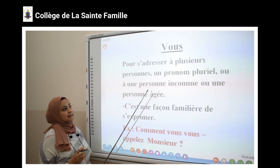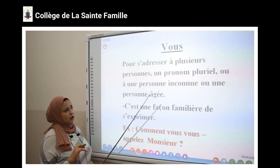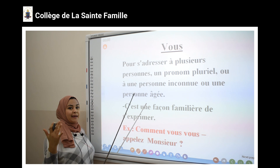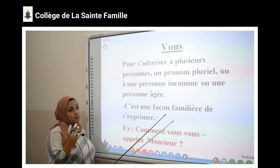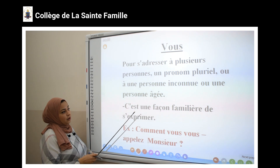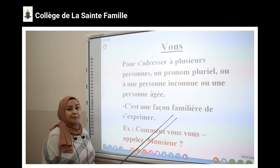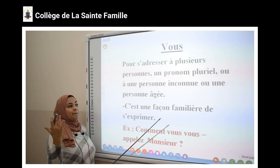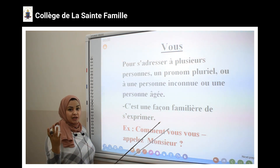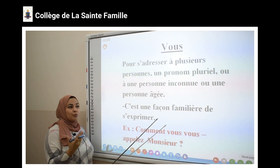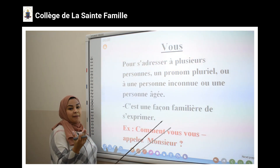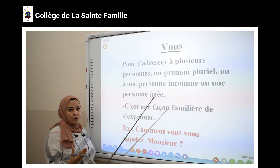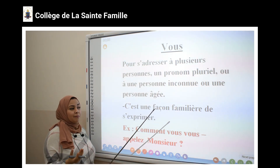Ou à une personne inconnue. Inconnue. Ou une personne âgée. C'est-à-dire une personne grande, comme grand-père, grand-mère, ma maîtresse, mon professeur, etc. C'est une façon formelle de s'exprimer. Je parle avec une personne âgée. Quand je parle avec mon professeur ou bien ma maîtresse, je ne dis pas « tu ». J'utilise le pronom « vous » pour respecter mon professeur, ma maîtresse, ma mère, mon père, etc.